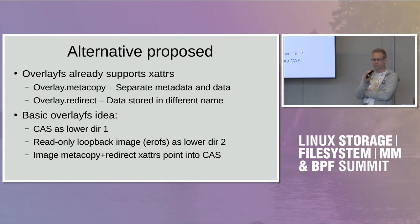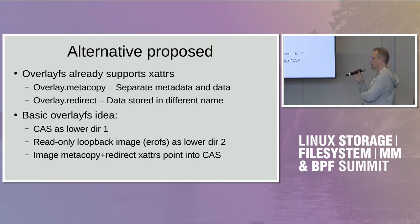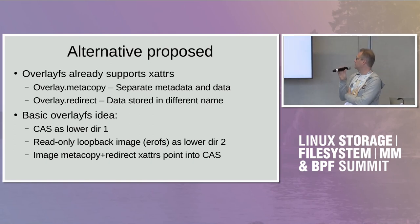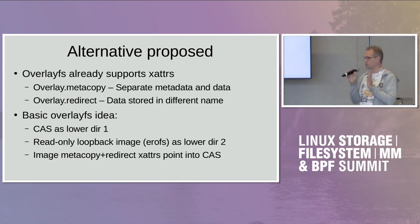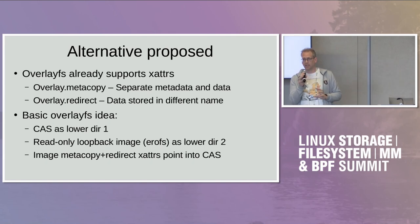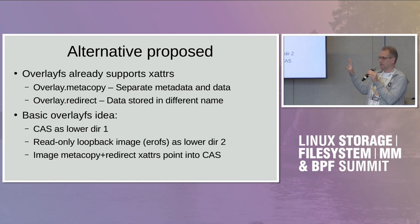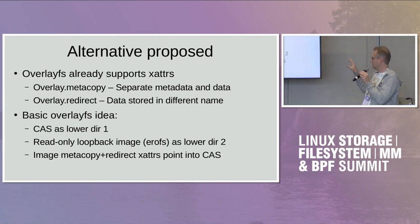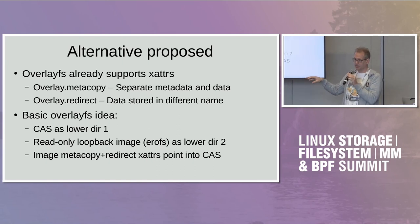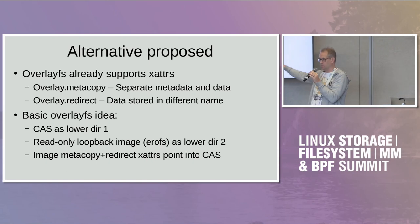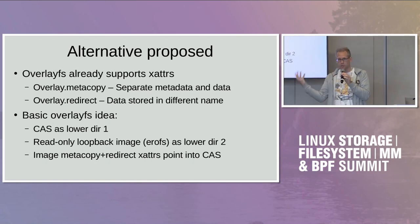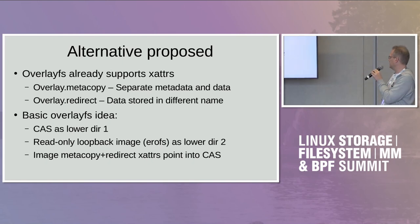However, during the sometimes heated discussions about this, it turns out there are actually features in overlayFS that sort of make this possible. There's a metacopy attribute that allows a two-layer system where you split metadata and file contents across different layers. There's also a redirect attribute where you can have different names for the same thing in different layers. So the theory is: you have two lower directories — the lower-most is your content-addressable storage, and the upper-lower is a loopback read-only mounted thing with extended attributes pointing to the lower. This union creates the same effect as ComposeFS.